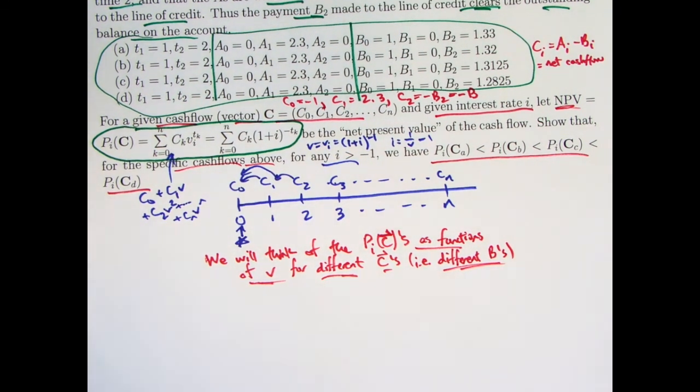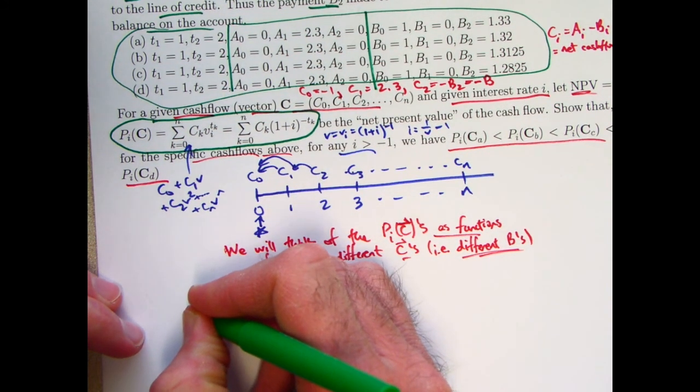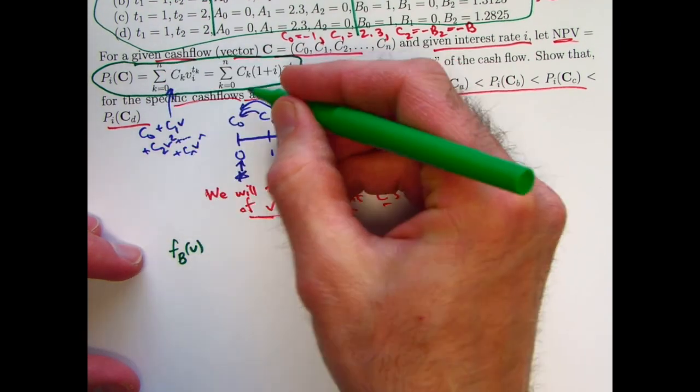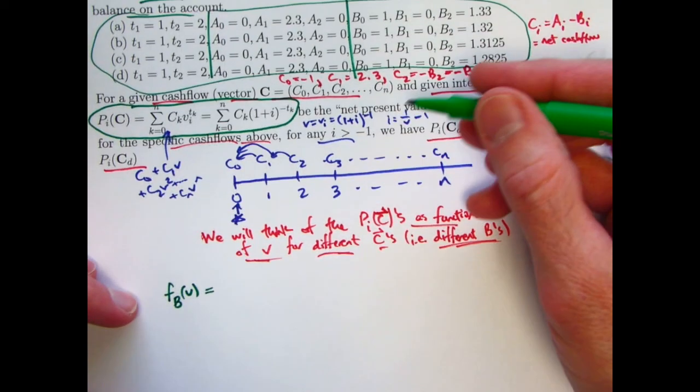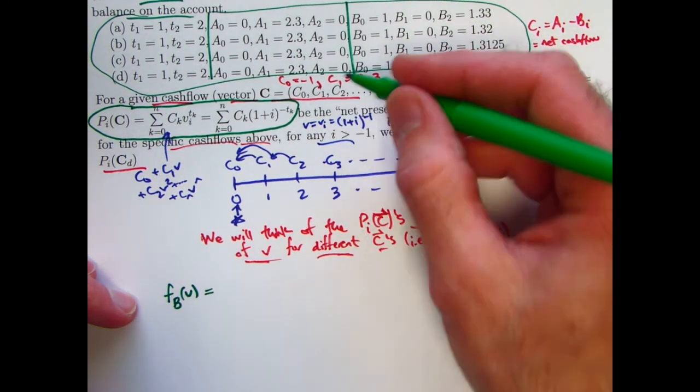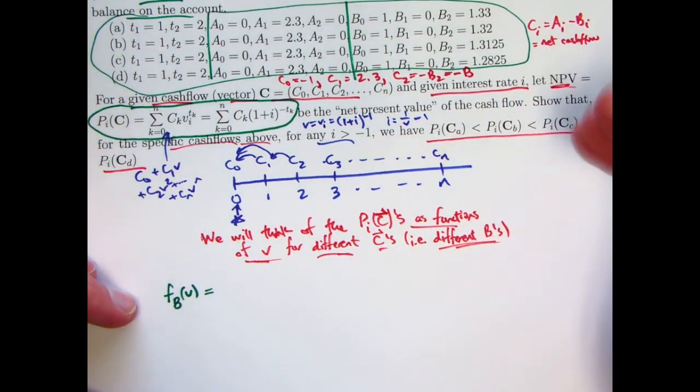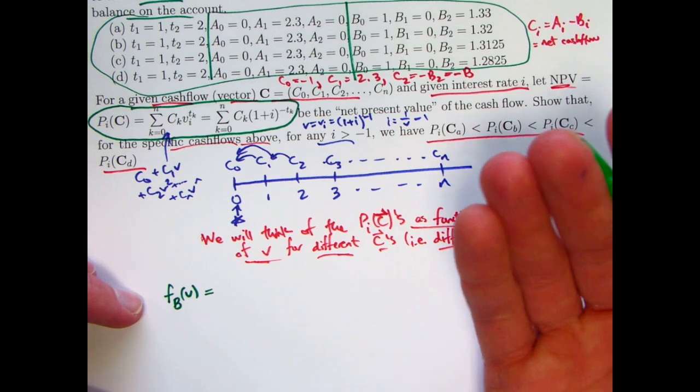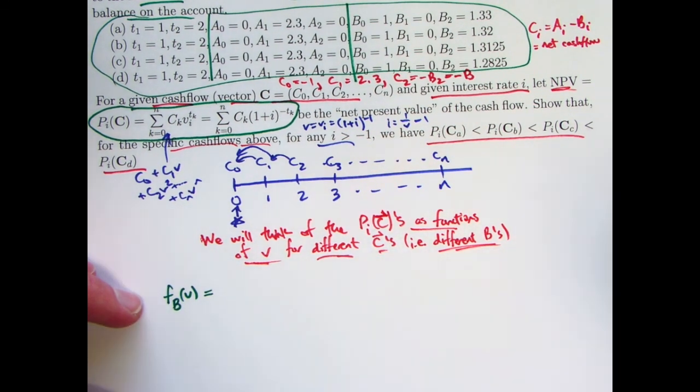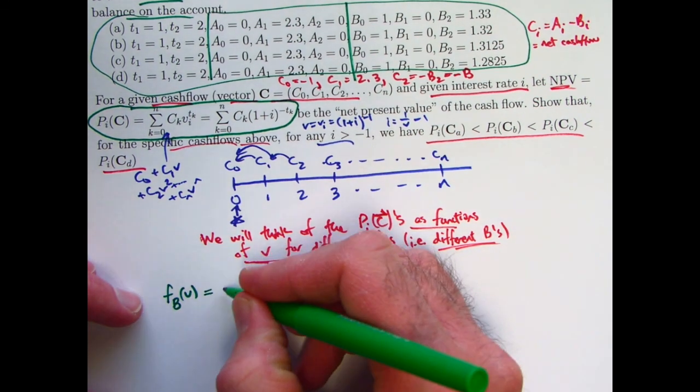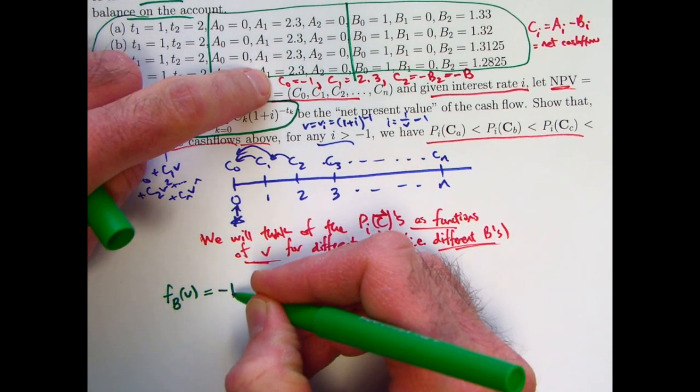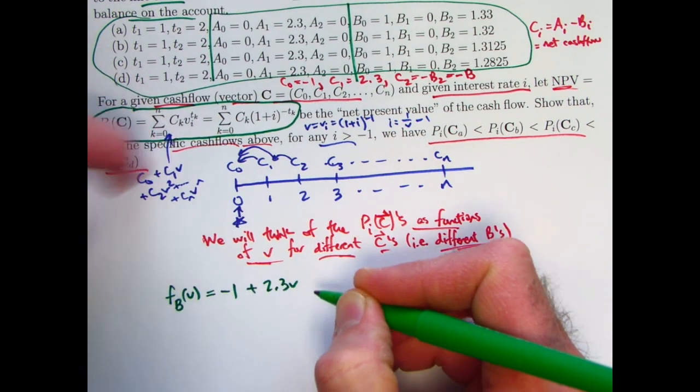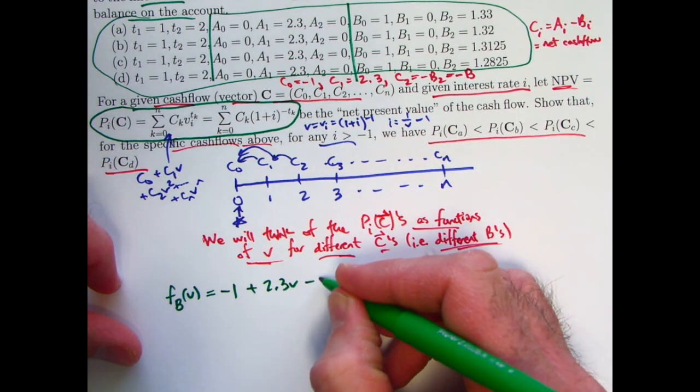I'm going to call these functions F sub B of V. It's going to represent this quantity right here with the given C0, C1, and C2. C0 and C1 are fixed. C2 is negative B. That's the thing that makes this really what you might call a family of functions, functions of V for different Bs. Each value of B gives you a different function of V. The formula, again, C0 is negative 1. C1 is 2.3. Then I get a plus 2.3 times V. C2 is negative B, that gets multiplied by V squared.